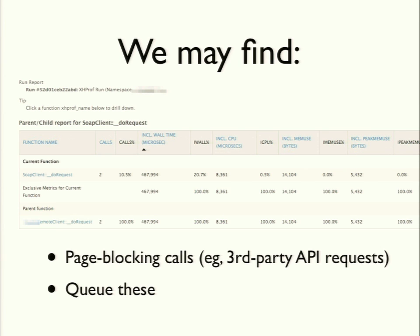You might find page-blocking calls — this is such a common one. If you have a site that makes a request to a third-party API within the page request cycle, the user is going to have to sit there and wait. You can see this in an XHProf run — a SOAP client do_request taking almost half a second, 467 milliseconds to make that request. If we can queue that and have it run outside the page request, it's going to be more performant.